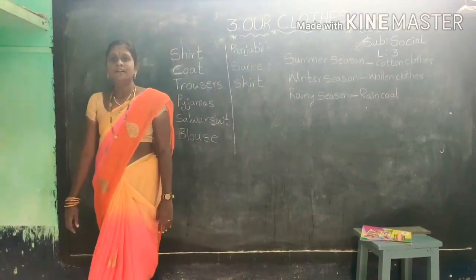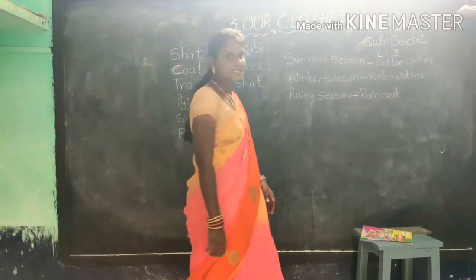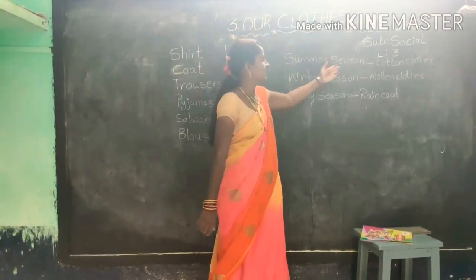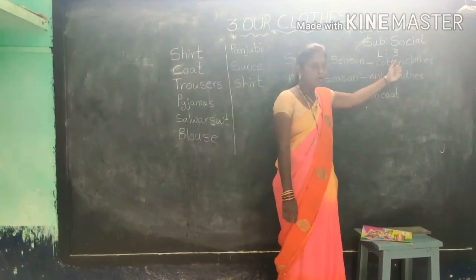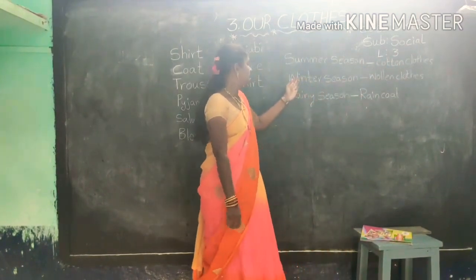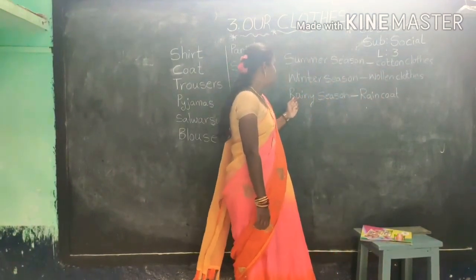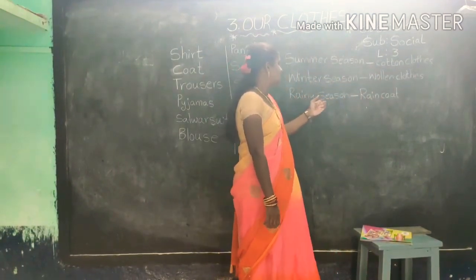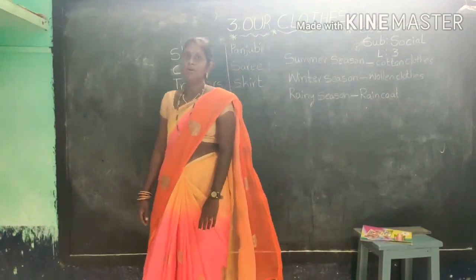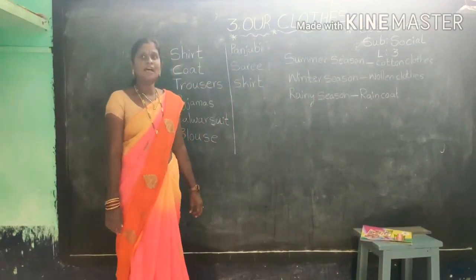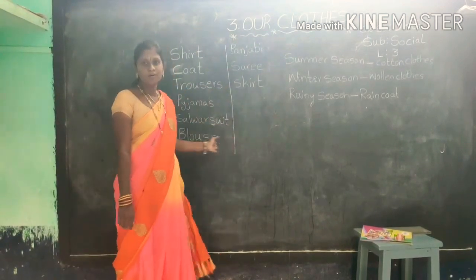We wear different types of clothes in different seasons. In summer season, we wear cotton clothes. In winter season, we wear woolen clothes. In rainy season, we wear rain clothes. That was all about clothes.